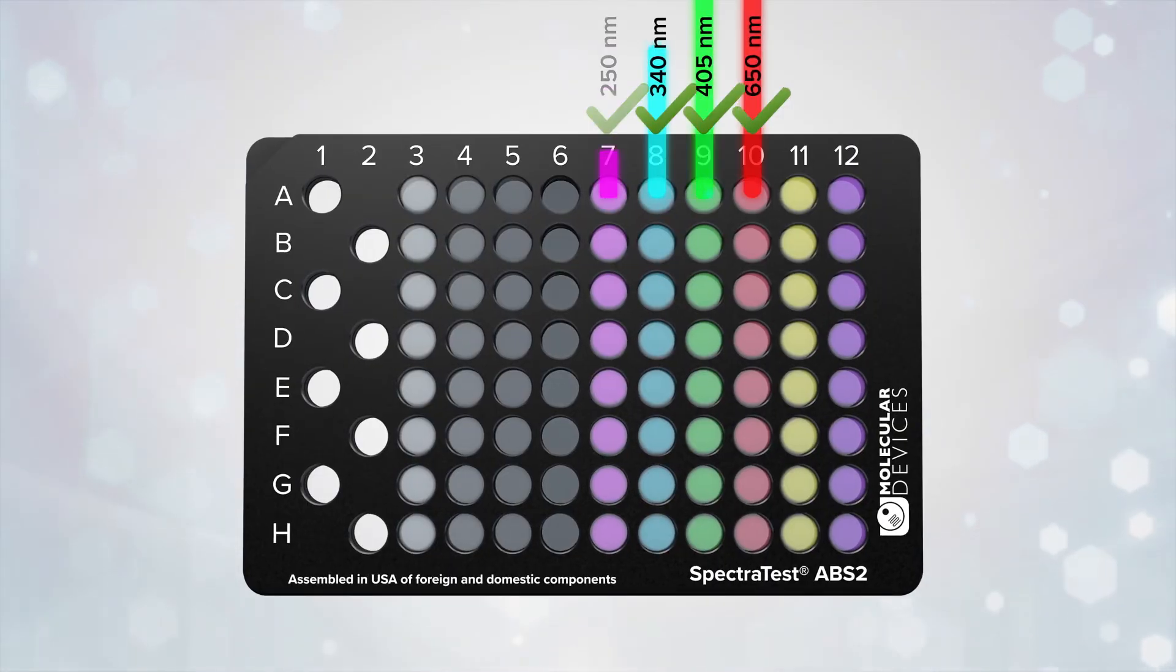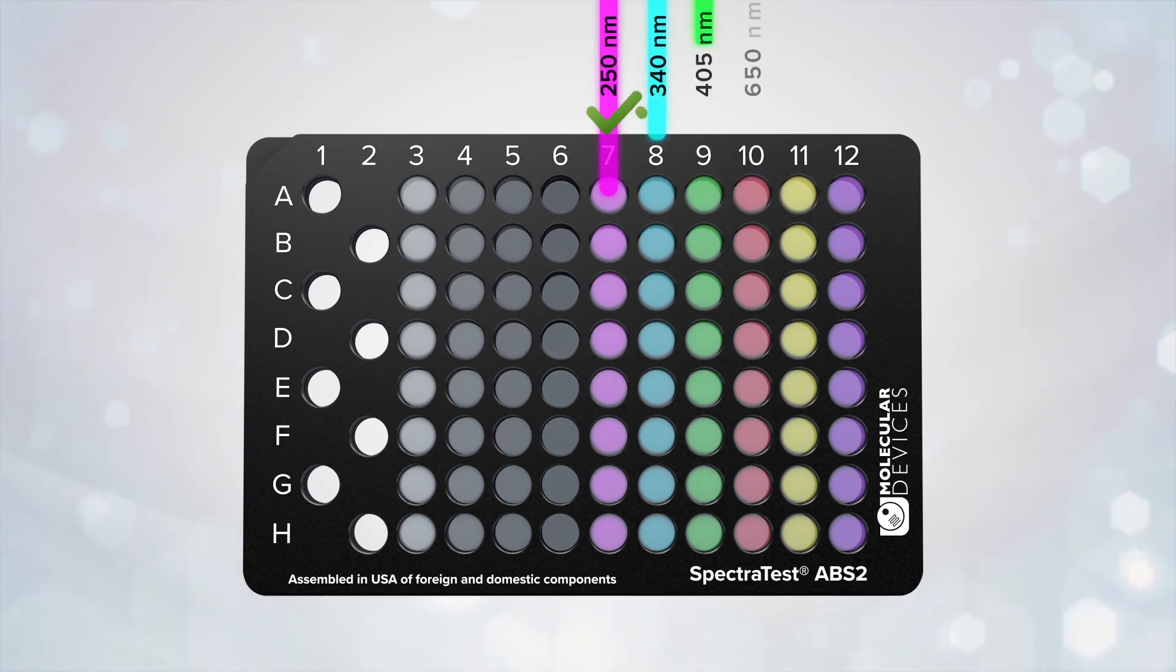Columns 7 through 10 contain filters to test stray light. This test is to make sure that only the light of the correct wavelength is leaving the monochrometers.